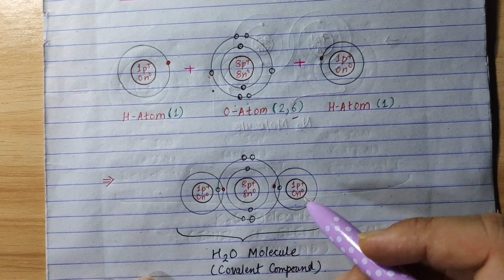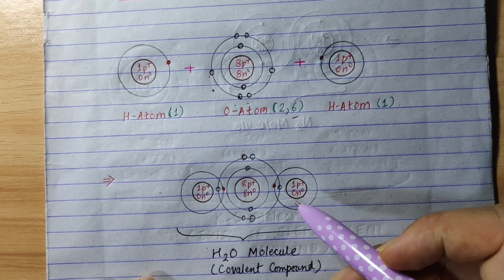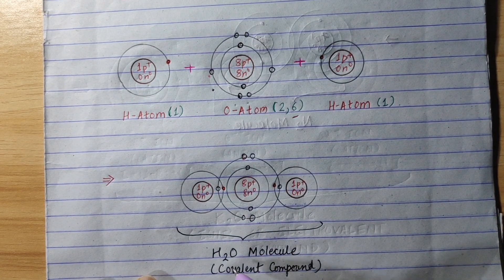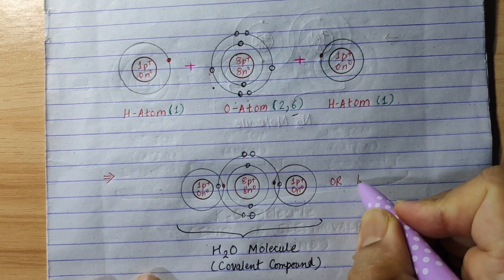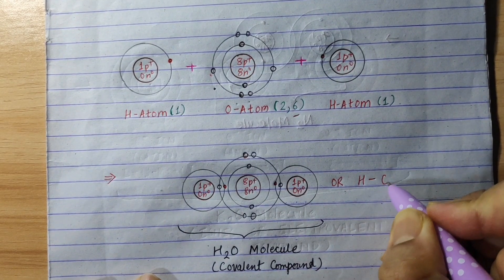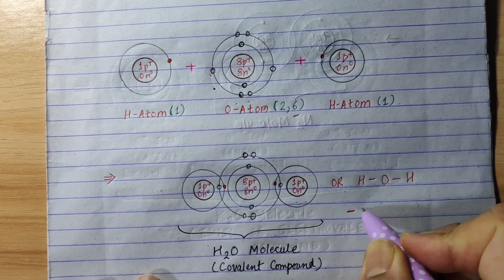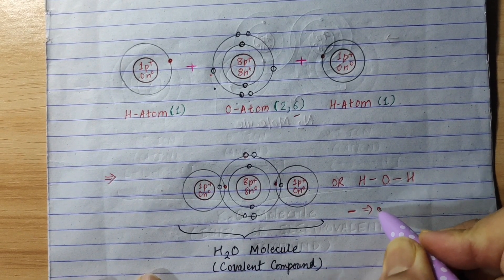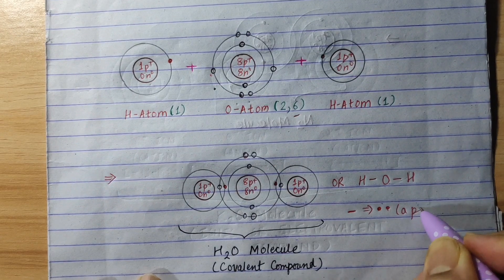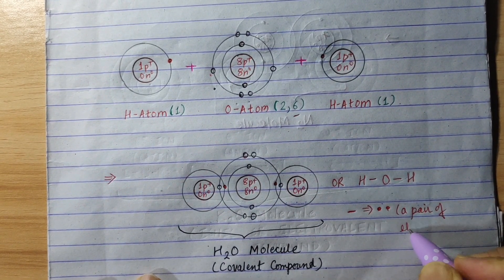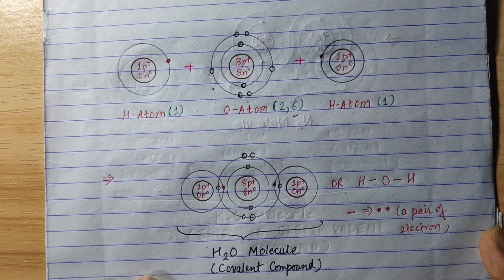The octet state is stable. For hydrogen, we count 1, 2 — the duplet state is stable. We now have a covalent compound. We can represent water as hydrogen dash O dash H, showing a pair of electrons for each bond. We have a stable water molecule.